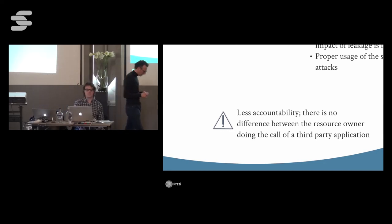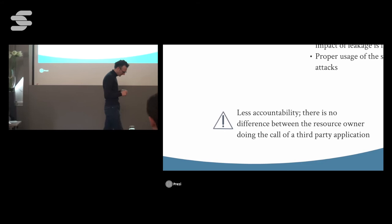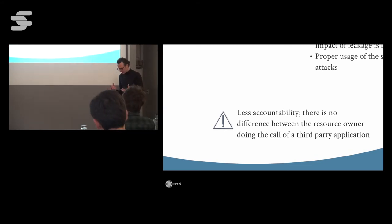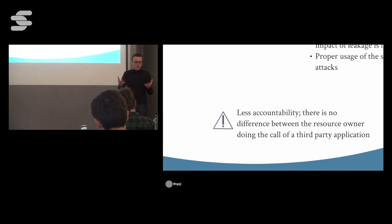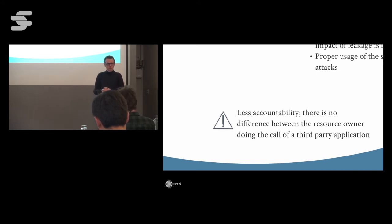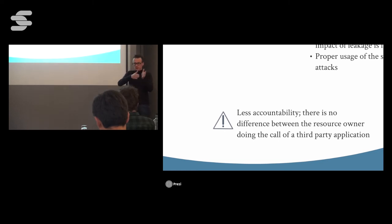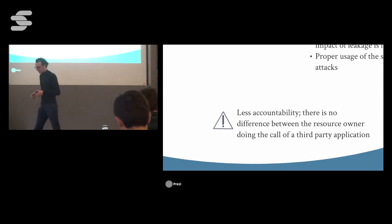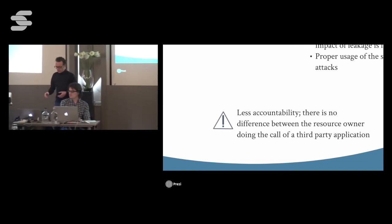A side note: because there is no way to properly authenticate the client in the implicit flow — the client ID is the only thing you have and it's in the open — an attacker can also use the same client ID. There is no real trust between the application and the resource provider here. In the server-side flow, we have both the client ID and the client secret to establish trust, but in the implicit flow that kind of trust is not in place.